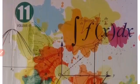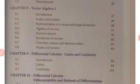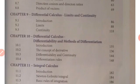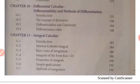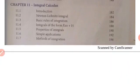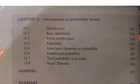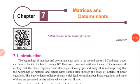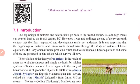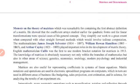Volume two: chapter seven is Matrices and Determinants; eighth, Vector Algebra; ninth, Differential Calculus — Limits and Continuity; tenth, Differential Calculus — Differentiability and Methods of Differentiation; eleventh, Integral Calculus; twelfth, Introduction to Probability Theory. Now we are going to discuss chapter 7: Matrices and Determinants. What is the definition of a matrix?